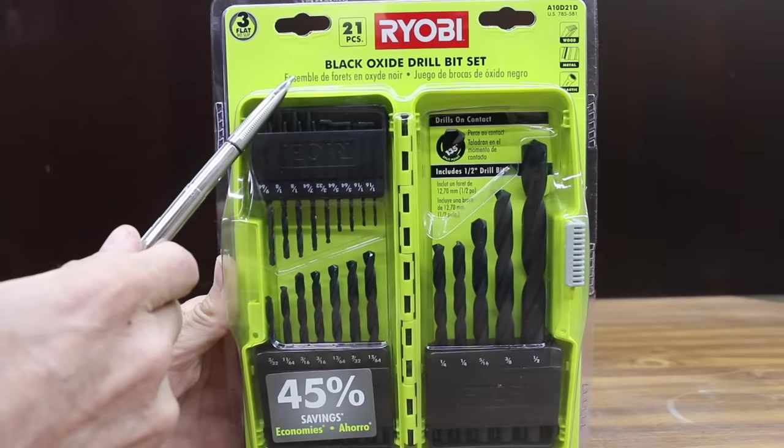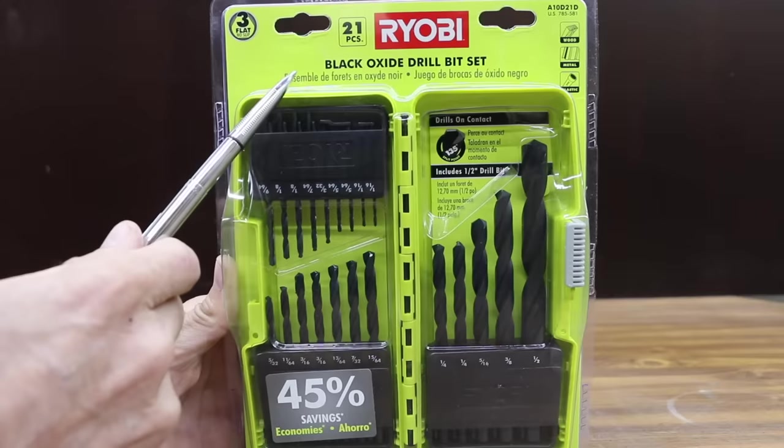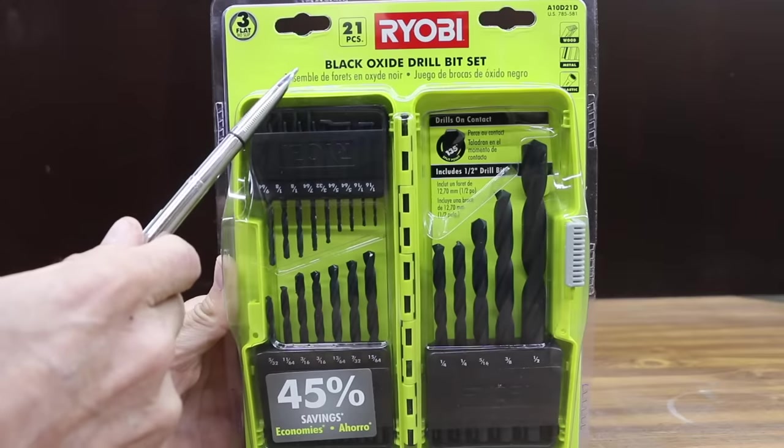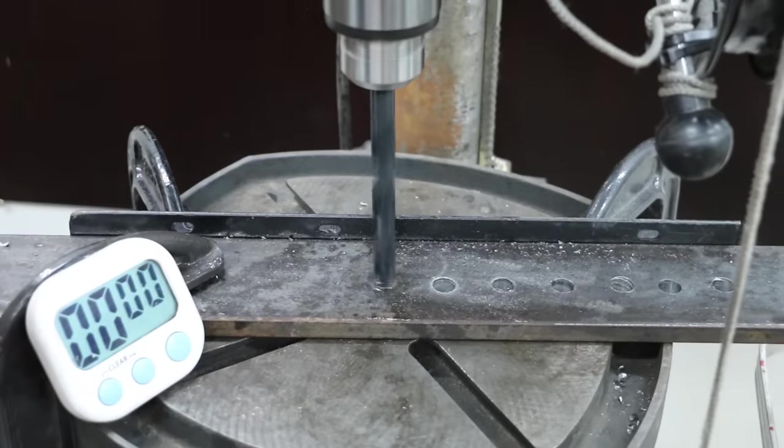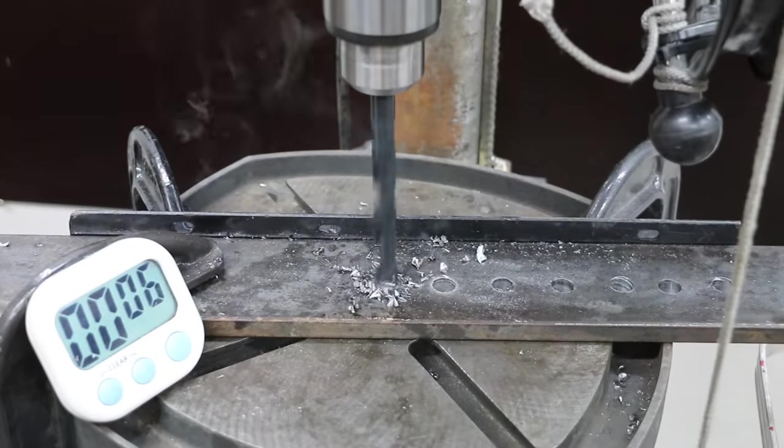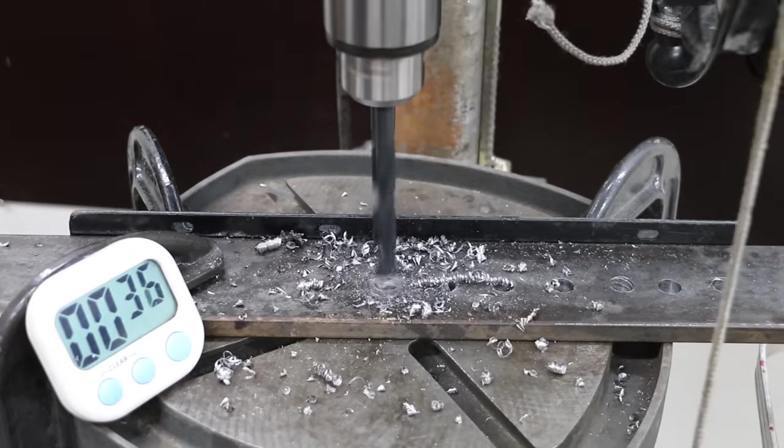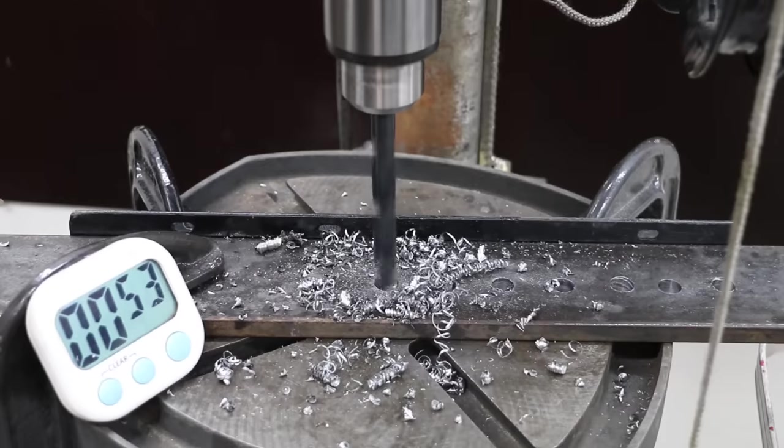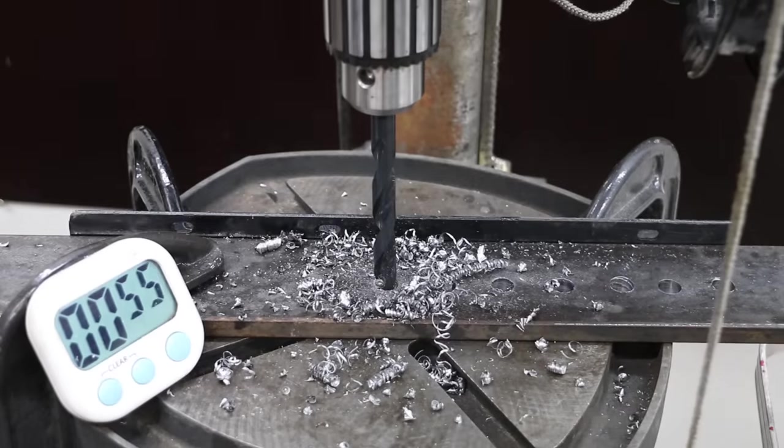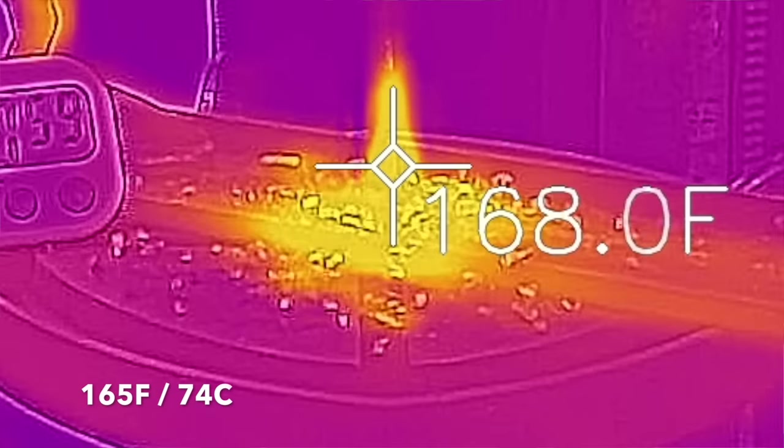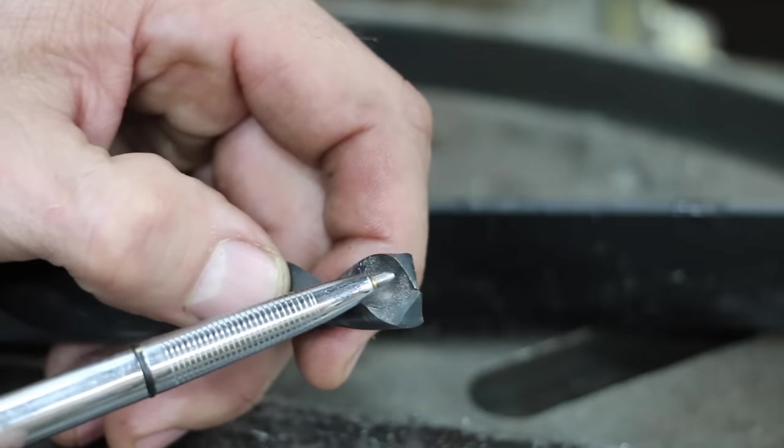Costing $15.97 is this Ryobi brand 21-piece Black Oxide drill bit set. 53 seconds for Ryobi. 165 degrees Fahrenheit on the drill. Looks like a very small amount of wear on the chisel.